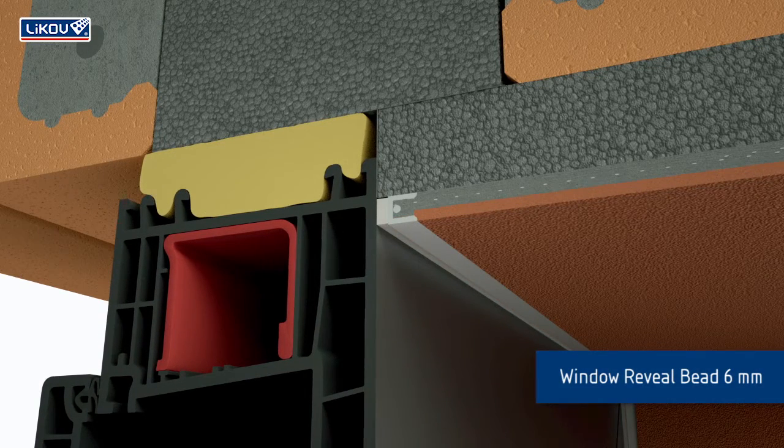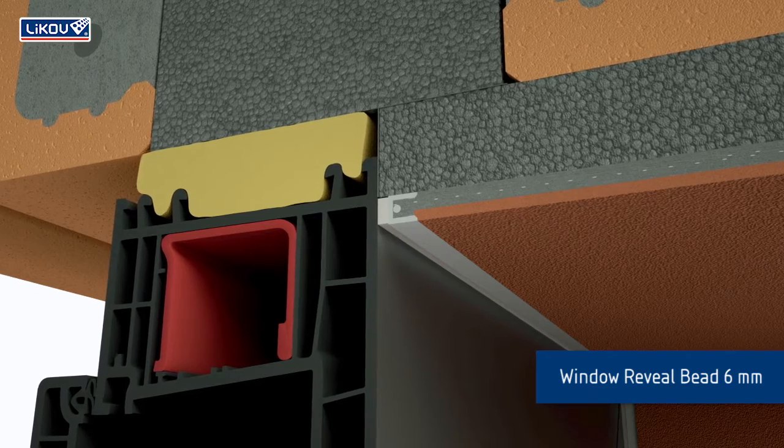Without the flexible joint, cracks would appear in the plaster and water would leak into the system.